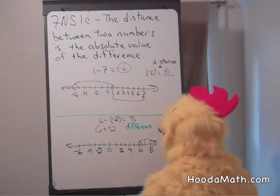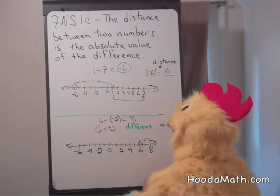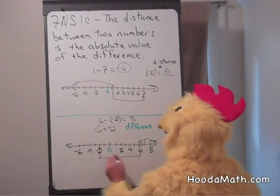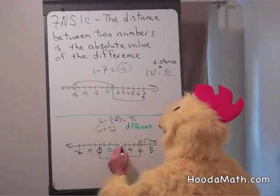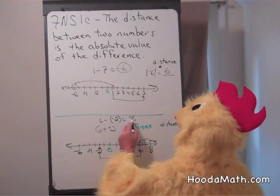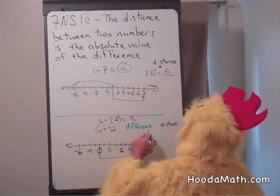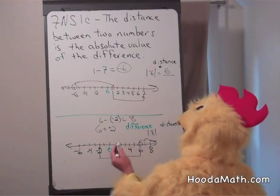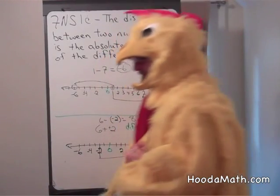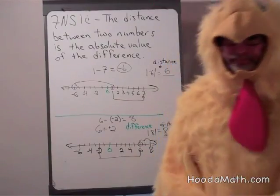So what is the distance between six and negative two? Here's negative two. Here's six. One, two, three, four, five, six, seven, eight. Which is the absolute value of eight. The absolute value of eight. How far is eight from zero? Eight units.